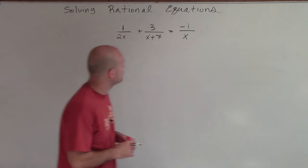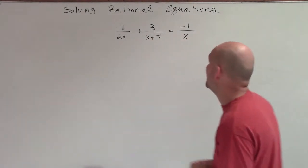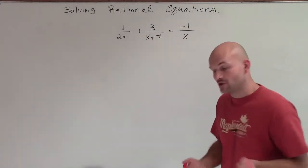Welcome. So what we have here is 1 divided by 2x plus 3 divided by x plus 7 equals negative 1 over x.